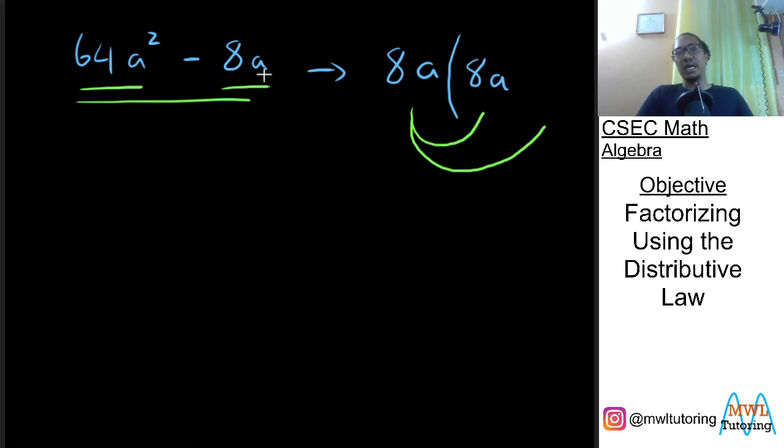And if I want to get back negative 8a, well we are already multiplying by 8a. So if I want to get negative 8a I just need to multiply by negative 1. And there you have it. Once again we've successfully factorized this expression.